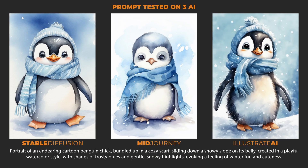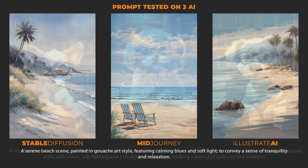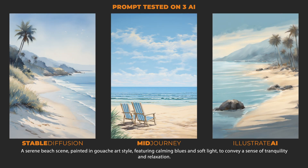Here I tested the prompt on three different AIs. At the bottom you can see the prompt I used. On the left is the image made by Stable Diffusion, in the middle is Midjourney, and on the right is Illustrate AI from Design Bundles. For the second test, I went for a cute cartoon dog with glasses. And for the third test, I chose a serene beach painting.